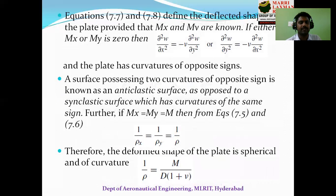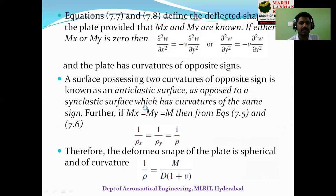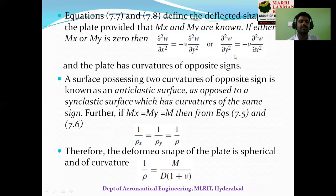From these expressions, deflection at any point can be found if Mx and My are known. If Mx = 0, then ∂²w/∂x² = −ν·∂²w/∂y², and if My = 0, then ∂²w/∂y² = −ν·∂²w/∂x². This shows the plate has curvatures of opposite signs. If the two curvatures are of the same sign, the surface is called synclastic; if opposite signs, it is called an anticlastic surface.